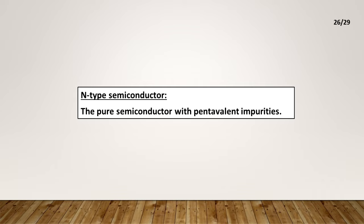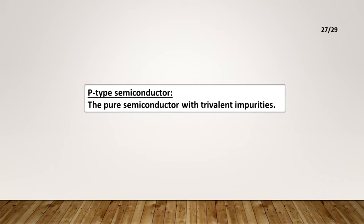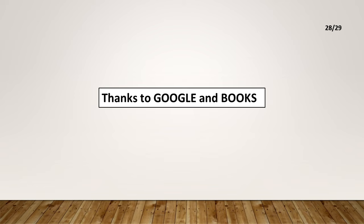N-type semiconductor: A pure semiconductor with pentavalent impurities. P-type semiconductor: A pure semiconductor with trivalent impurities. Thanks to Google and books.